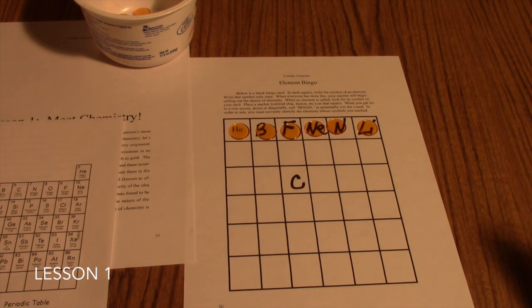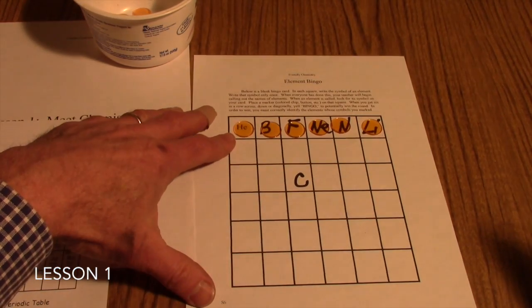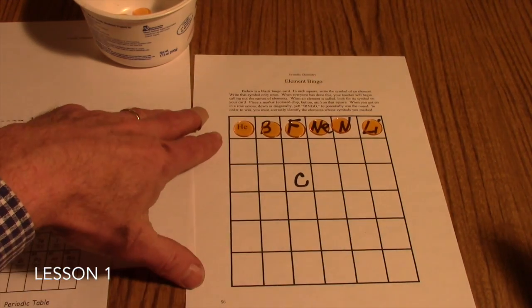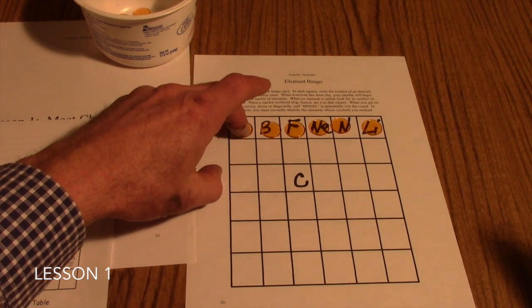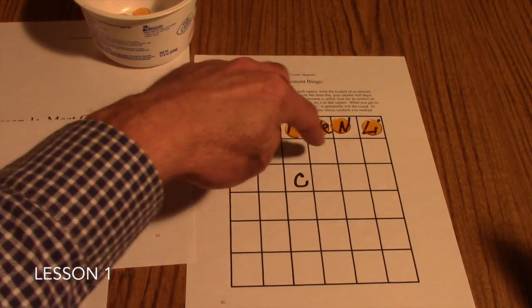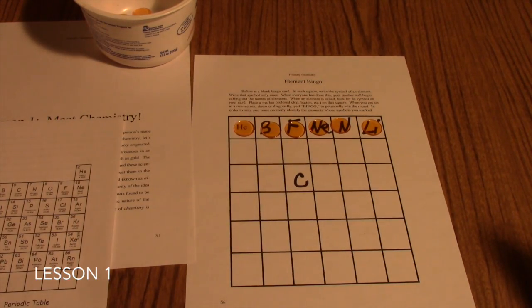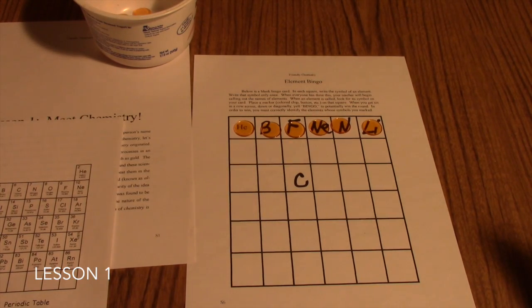One more variation is that if you make copies of these bingo cards, or if you just make a new set of cards, you can reverse the process. Instead of having the students write symbols on the cards, have them write names on the cards. They'll fill their card with names, and then you will call out symbols, and they find those corresponding names on the bingo card and play again.